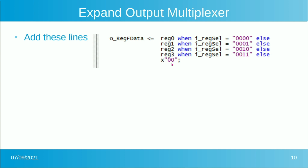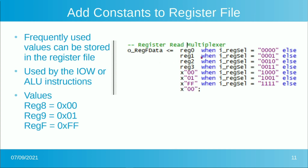We can also expand the read multiplexer with special-purpose read-only constant registers. Register 8 is always 0 — useful for writing a zero to an IO port without having to load it. Register 9 is always 1. Register F is always 0xFF. We've still got registers 4 through 7 and A through E available. These constants are easily expandable — at least 8 more register slots remain.